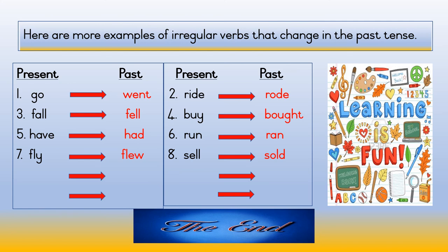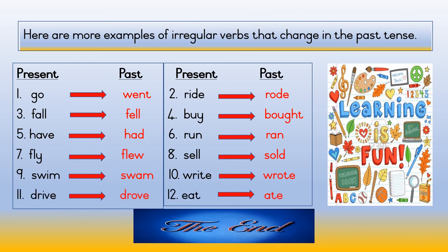Number seven — present tense: fly; past tense: flew. Number eight — present tense: sell; past tense: sold. Number nine — present tense: swim; past tense: swam. Number ten — present tense: write; past tense: wrote. Number eleven — present tense: drive; past tense: drove. Number twelve — present tense: eat; past tense: ate. Happy learning boys and girls — bye till the next lesson!